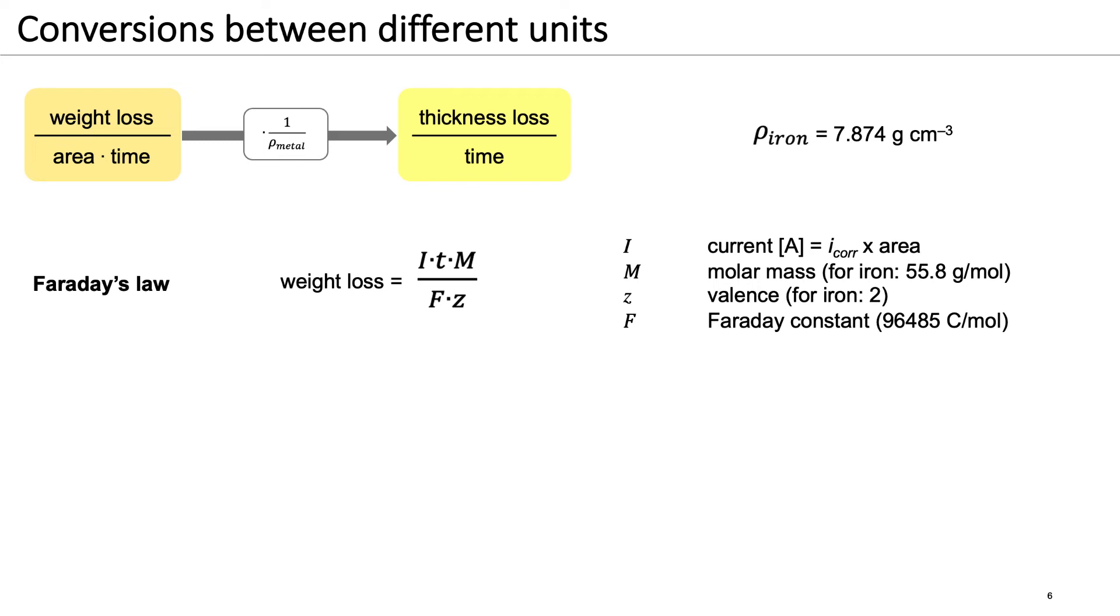The electrical charge is the current I multiplied by the time T. Multiplying this with the molar mass of the metal M and dividing by the Faraday constant F and the valence Z yields the weight loss accumulated over time T.